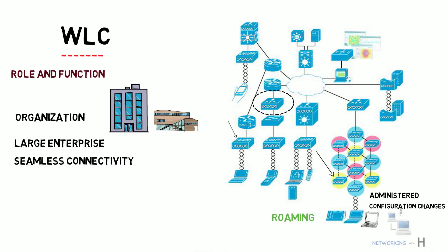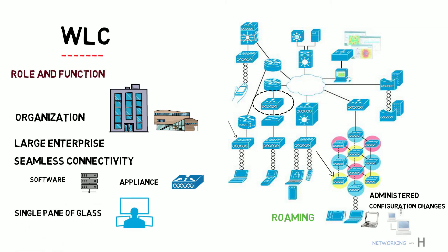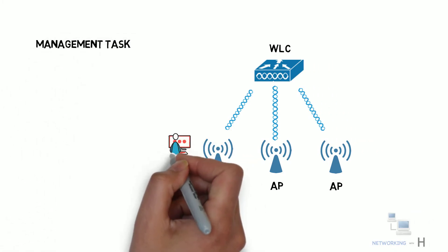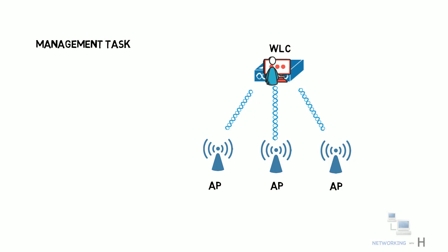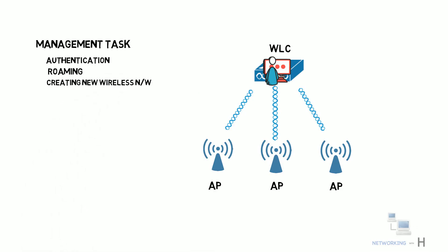The WLC is usually software loaded on one of your servers, or it is an appliance like this one, that centralizes the management of access points. Some people call this a single pane of glass — you can go to one screen and see everything happening with your wireless access points. By using WLCs, all management tasks are moved from the access points to the Wireless LAN Controller. It takes care of authentication, roaming, creating new wireless networks, and more. This also makes it very easy to deploy new access points, as you simply plug in the access point into the network and the wireless controller configures everything from the central point. If you need to make any configuration change across all of your access points, you can do it in one place on the wireless controller.